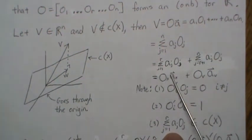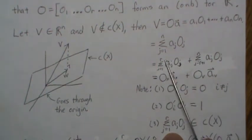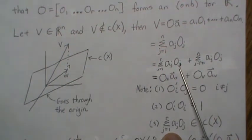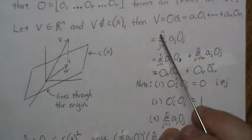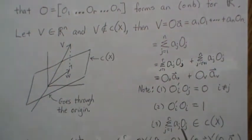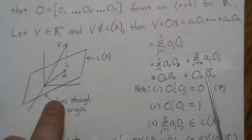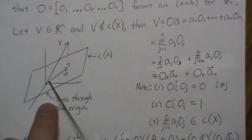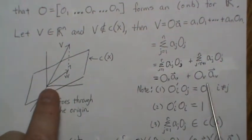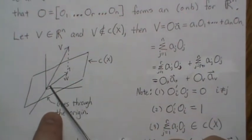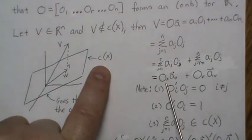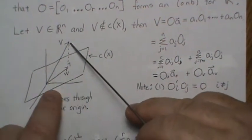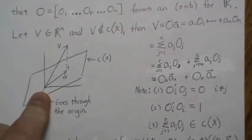The first piece, OX·AX, is actually in the column space of X — it is a linear combination of the orthonormal vectors that span the column space of X. So the first piece of V lives somewhere in this column space. The second piece, OV·AV, is some other vector — it could go off in any direction — and these two vectors must add together to give V. They are also perpendicular to each other.